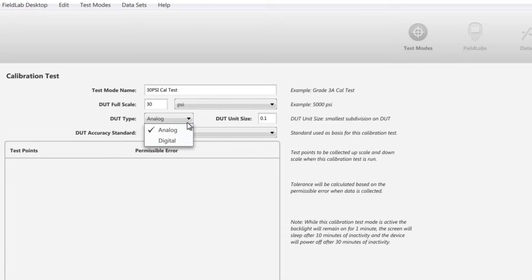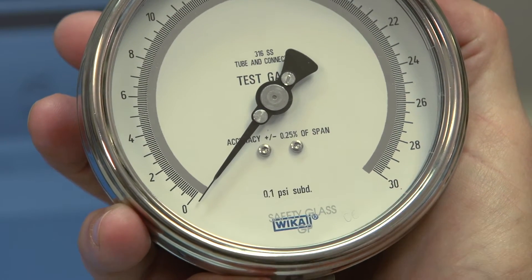The default for DUT type is analog, but digital can be selected if you're calibrating digital pressure gauges or transmitters. We'll select our unit size as 0.1, which is the smallest subdivision of measurement on our analog gauge.